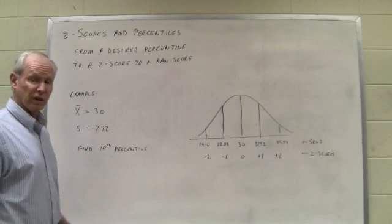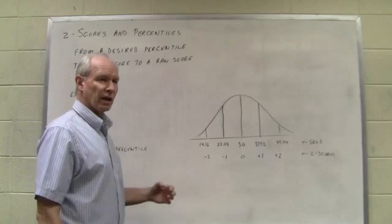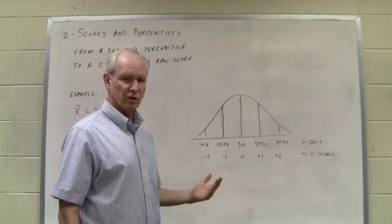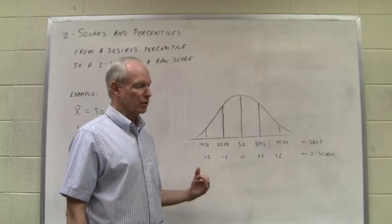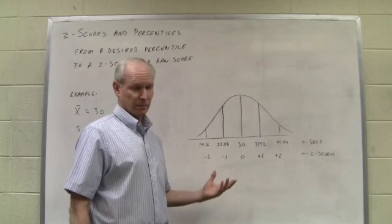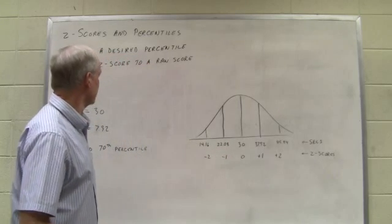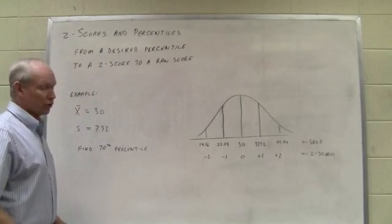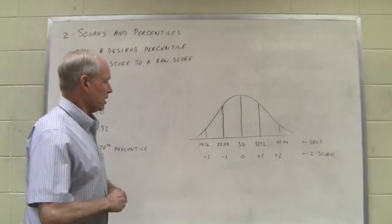So we need to start with that percentile, then we're going to convert to a z-score, and then we're going to use the z-score to go to the table of the normal distribution and use the z-score to compute a raw score from that.